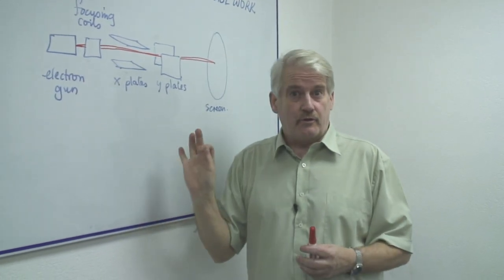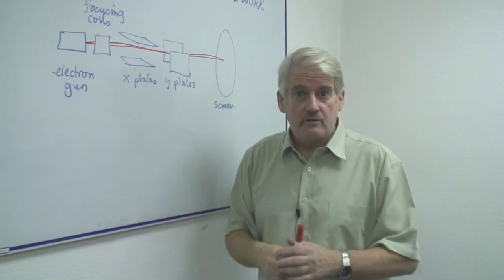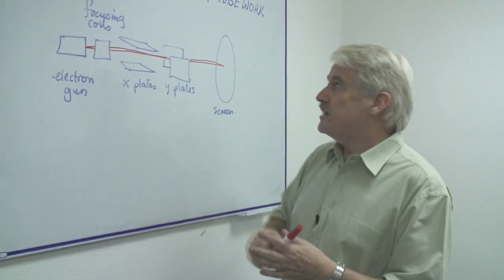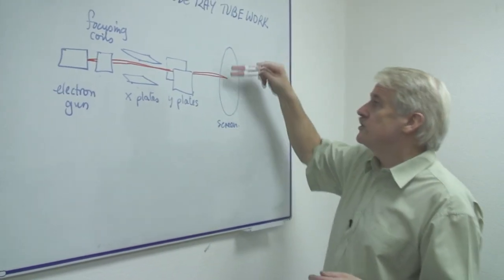First of all, what is it for? Well, we've seen TVs and TV screens and that basically is this end of the cathode ray tube.